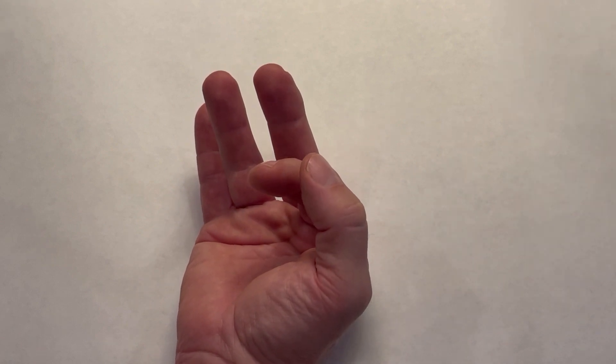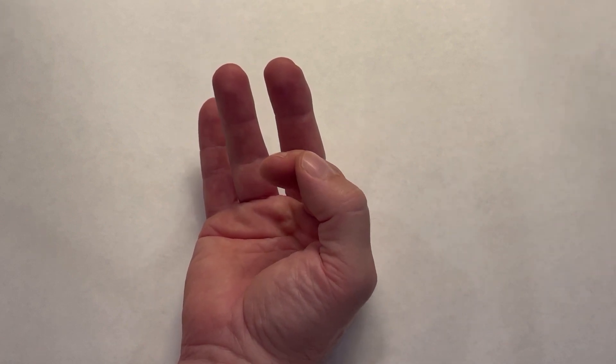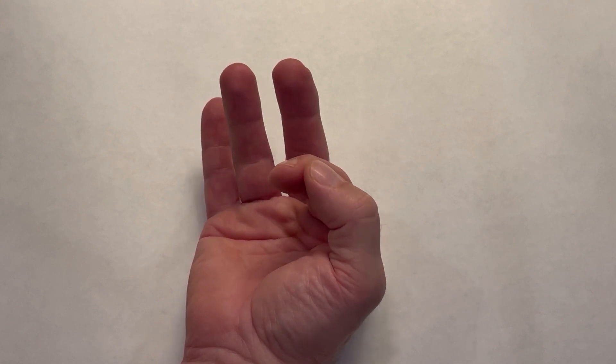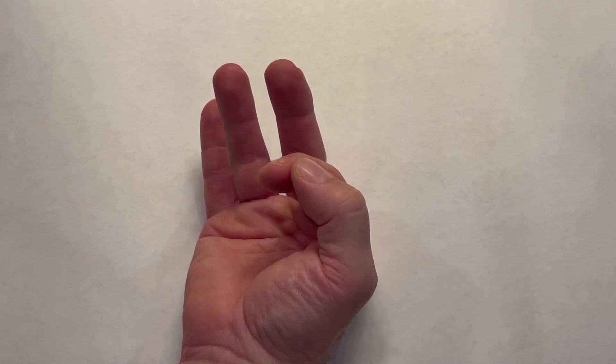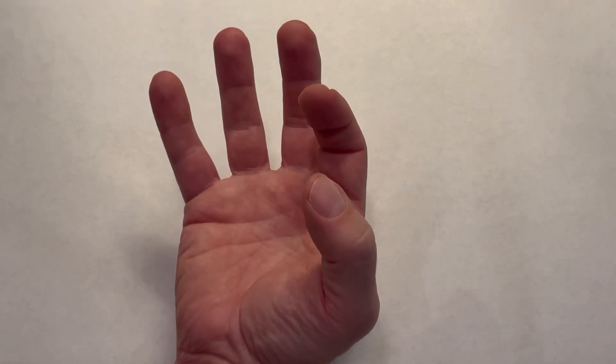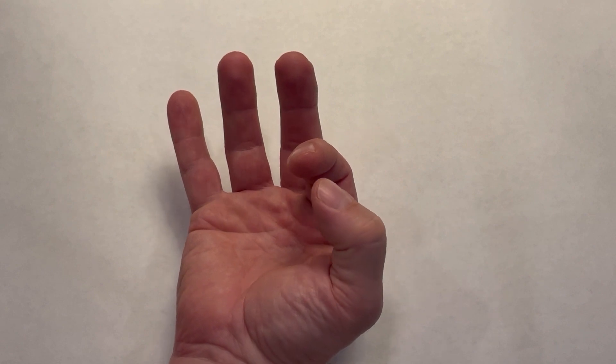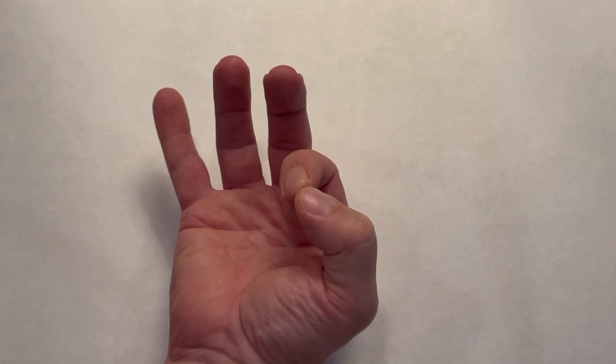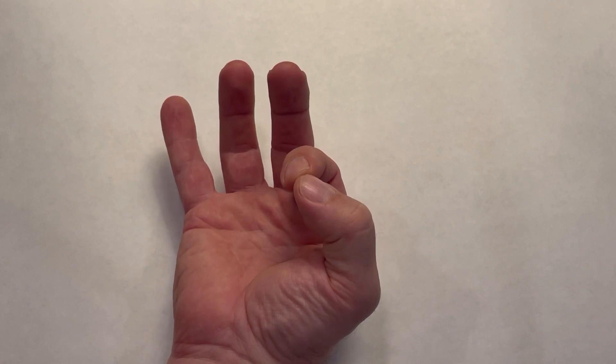Stage 2 is the thumb pad to the radial side of the distal phalanx of the index finger. Stage 3 is where we really start to see more opposition, and that is thumb pad to index finger pad. That's stage 3.